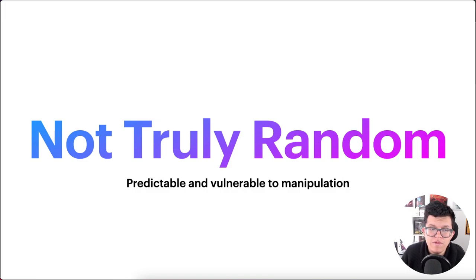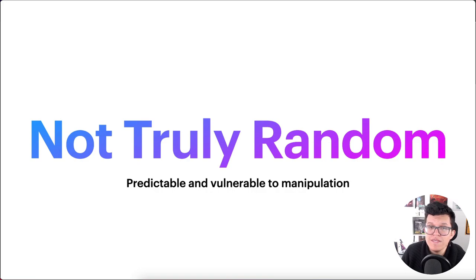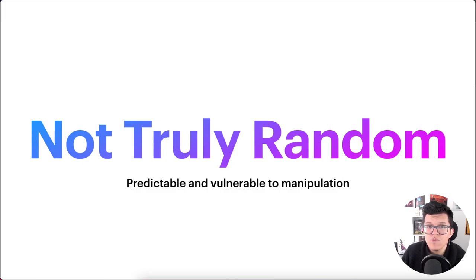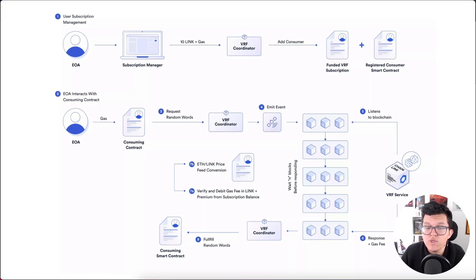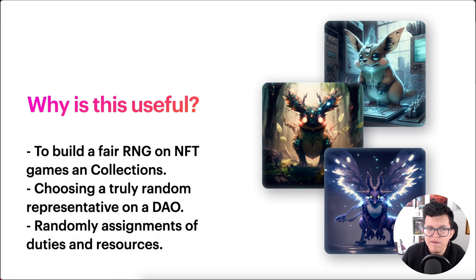When you ask a computer for a random number, it's going to look into memory space and return something it considers random enough. But these numbers are actually pseudo-random — they are easily predictable and vulnerable to manipulation. So your decentralized application might be at risk if someone predicts what those random numbers are. Chainlink uses a different approach: they get that random number using a lot of different nodes, which allows you to get a truly random number.